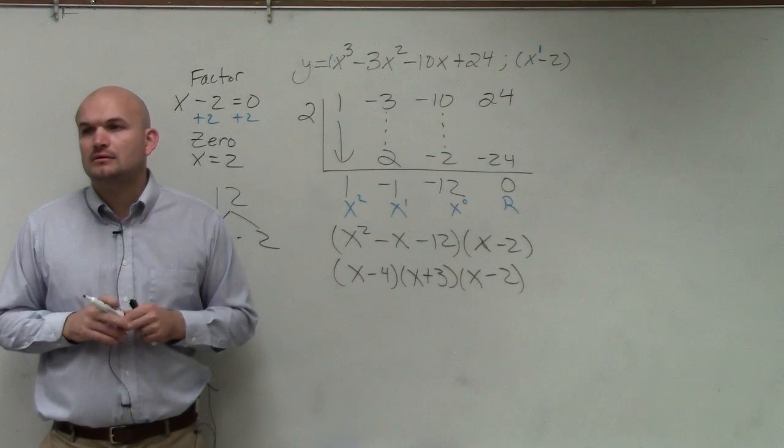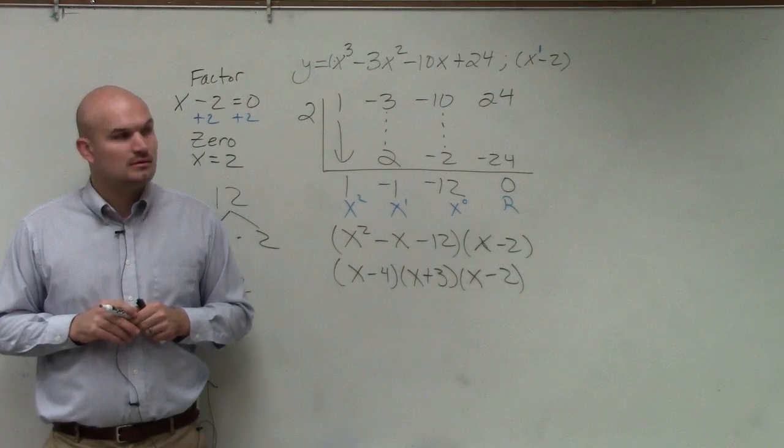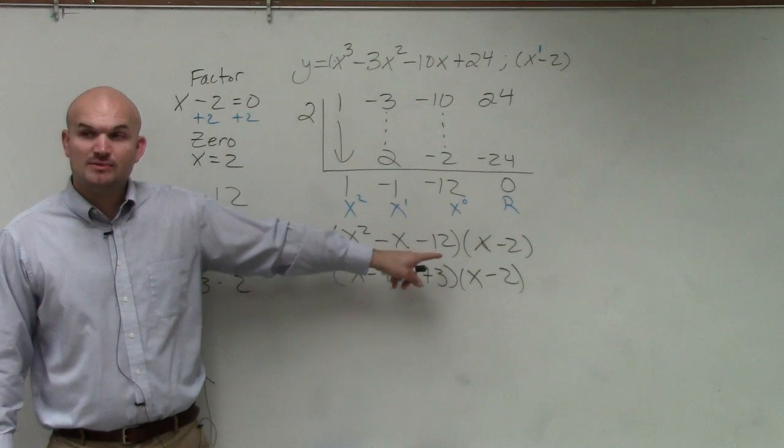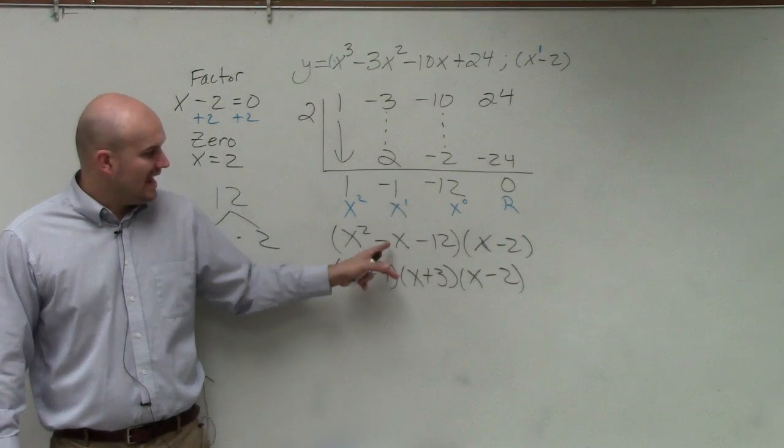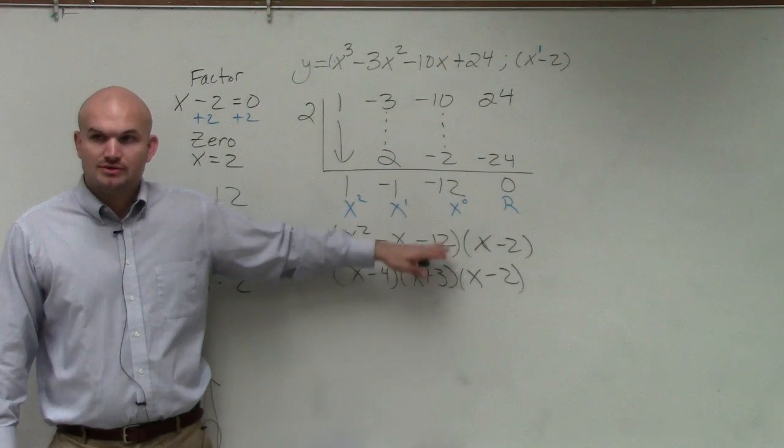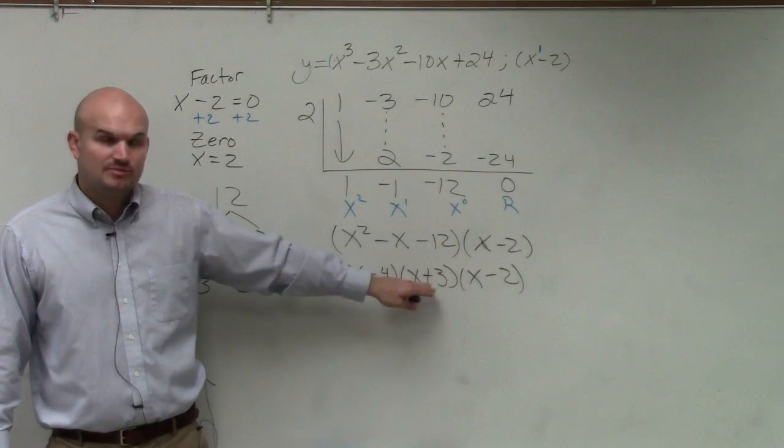I factored this into this. So I said what two numbers multiply to give you negative 12, add to give you negative 1. That was negative 4 and positive 3. So I factored down the trinomial into two binomials.